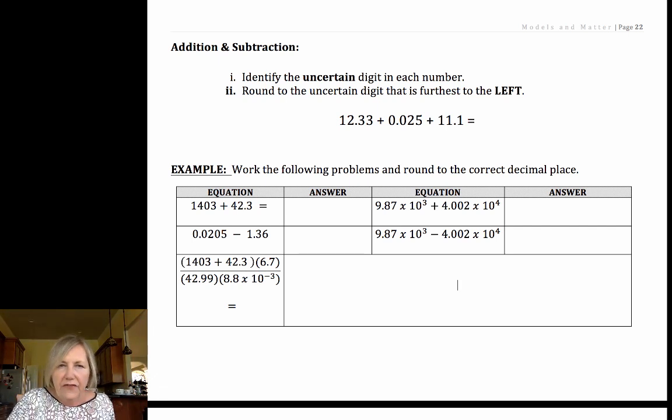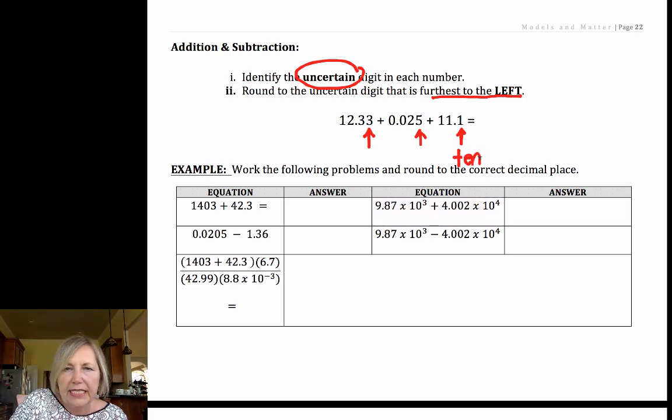Now the rule shifts for addition and subtraction. With this, we're not counting the number of significant figures. We're trying to find the uncertain digit that's furthest to the left. So in this case, this uncertain digit is in the hundredths, this uncertain digit is in the thousandths, this uncertain digit is in the tenths. The tenths place is the furthest to the left, so when we perform this math, we need to round to the tenths place, the furthest uncertain digit. Remember, the last digit reported is always assumed to be uncertain.